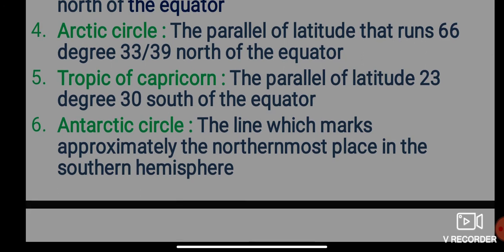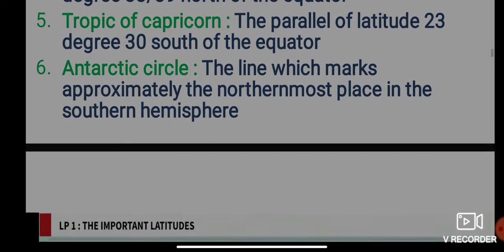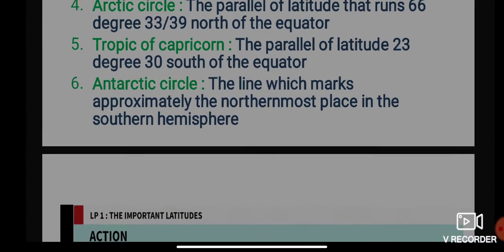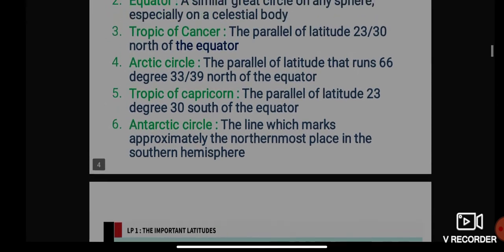What is the Tropic of Capricorn? The parallel of latitude 23 degrees 30 south of the equator is known as the Tropic of Capricorn. And lastly, what is the Antarctic Circle? The line which marks approximately the northernmost place in the southern hemisphere is known as the Antarctic Circle.